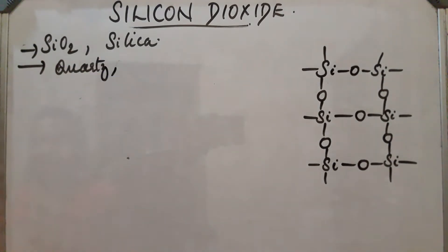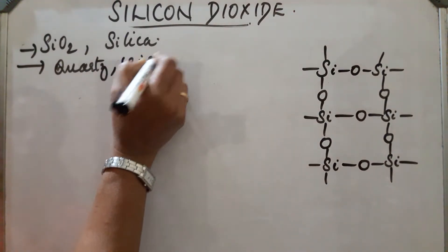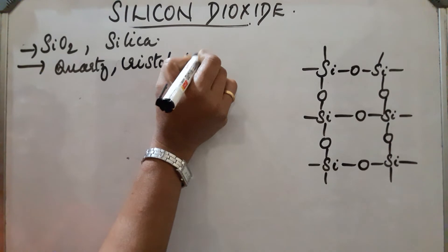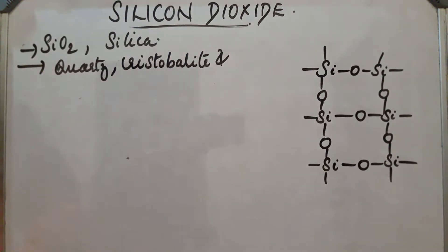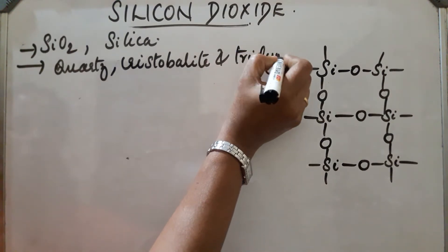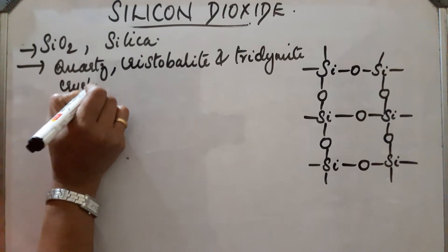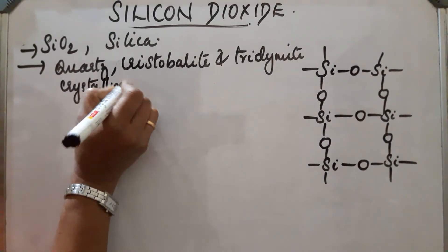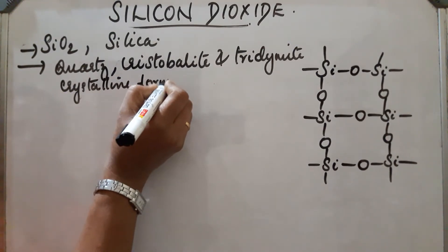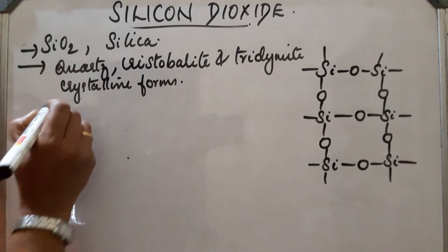Then cristobalite and tridymite, these are the different crystalline forms of silicon dioxide. Now these crystalline forms are interconvertible at suitable temperature.